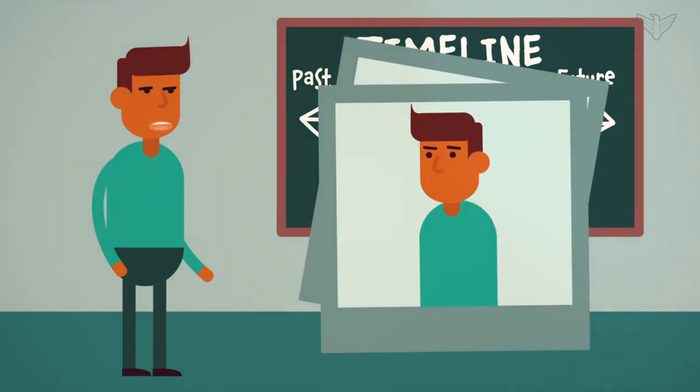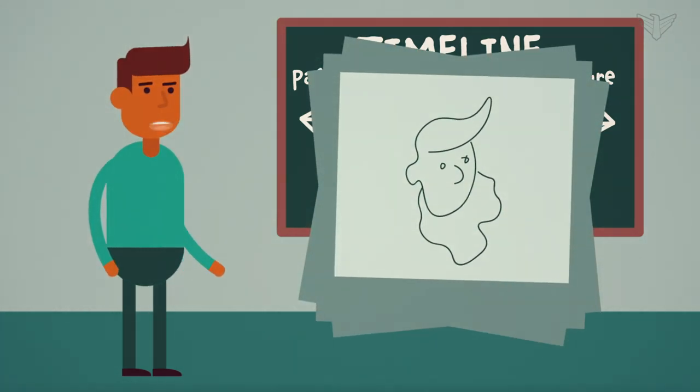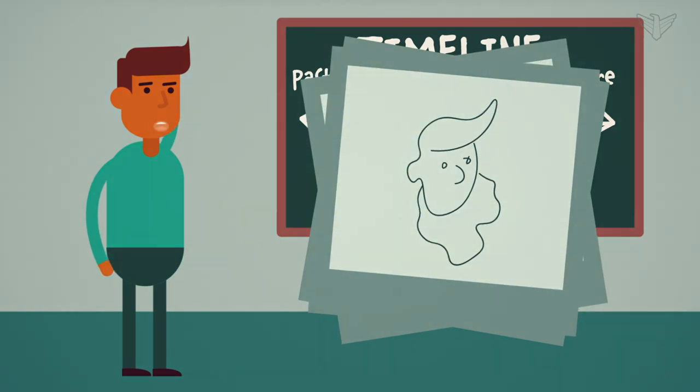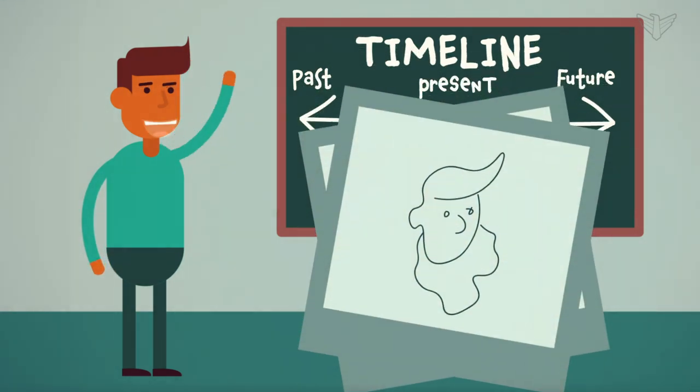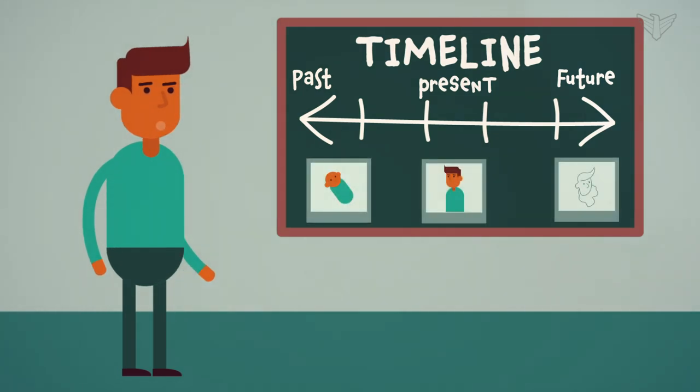For the future, we drew a picture of ourself when we were older. Look at how gray my hair and beard are. I kind of look like Santa. Then we took each photo and pasted it on our timeline. We also included other events that happened during the same time period.